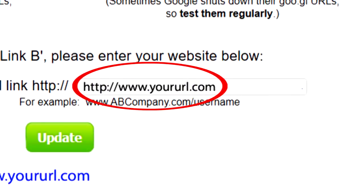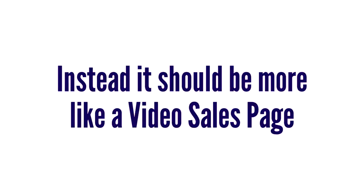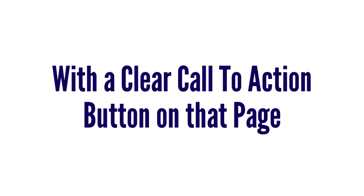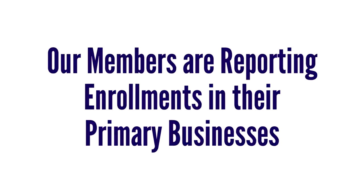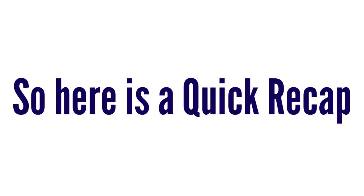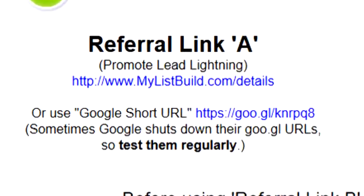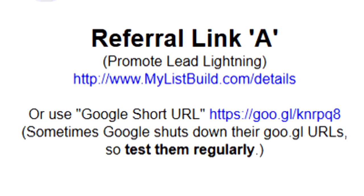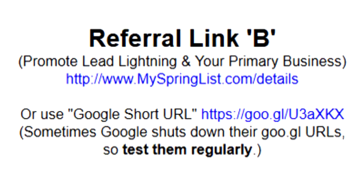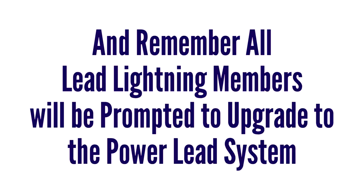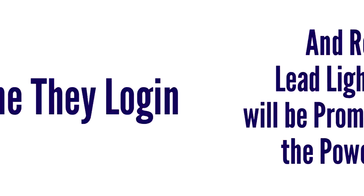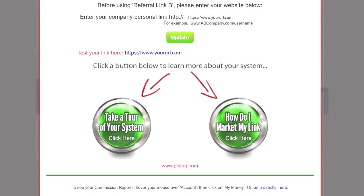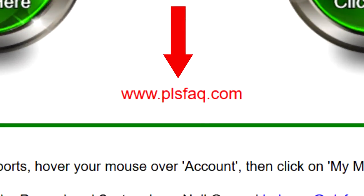The website you enter here should not be a company website, because company websites don't sell. Instead, it should be more like a video sales page with a clear call-to-action button. Our members are reporting enrollments in their primary businesses because of this amazing email campaign. Here's a quick recap: use referral link A if you only wish to promote Lead Lightning, and use referral link B if you want to promote Lead Lightning and your primary business. Remember, all Lead Lightning members will be prompted to upgrade to the Power Lead System every time they log in.